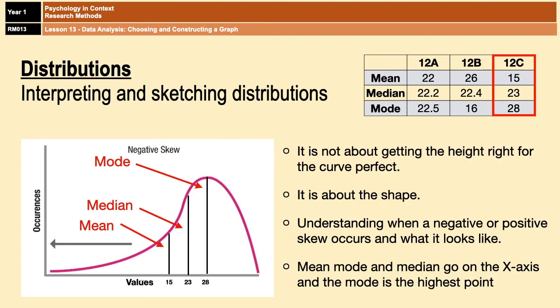And then finally, one of the things that my students ask me almost every time they have to draw a distribution is how do we know how high to draw the curve? And the simple answer is, for psychology, it doesn't matter. It's not about getting the height right for the perfect curve. It's about getting the shape right, so that the examiner knows that you've understood what type of distribution is being shown. So for this, let's use the results for 12C, which you can see in the top right. All you need to do is, step one, draw your x and your y axes in that typical L shape.